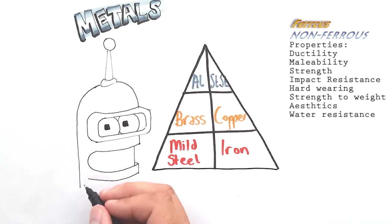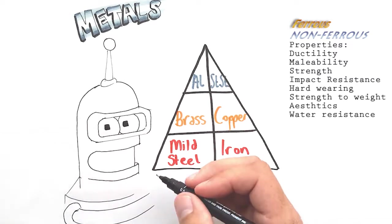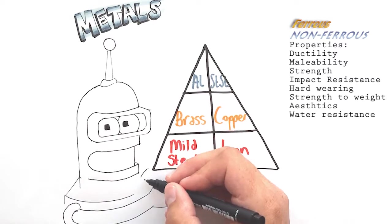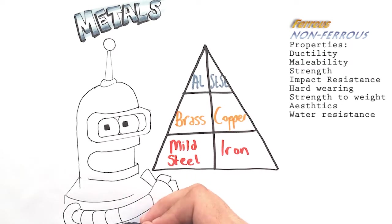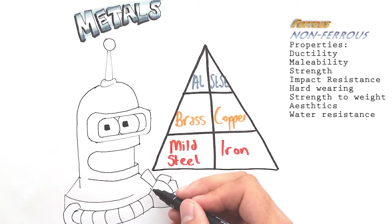A highly ductile metal will be able to be formed into really intricate shapes. If a material or a metal isn't malleable it will not be able to be formed into shape. Similarly, with strength,